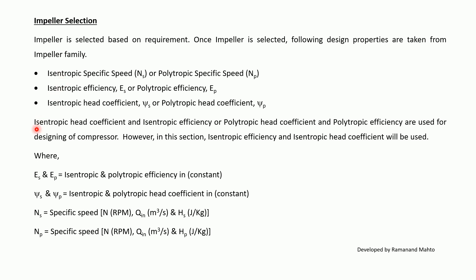Either a set of isentropic efficiency and isentropic head coefficient or polytropic efficiency and polytropic head coefficient can be used. In these sections, isentropic efficiency and isentropic head coefficient will be used. ES and EP are isentropic and polytropic efficiency; psi_S and psi_P are isentropic and polytropic head coefficients; Ns and Np are specific speeds. For Ns, N is in RPM, Q is in m³/s, and HS is isentropic head in J/kg. For Np, HP is polytropic head in J/kg.